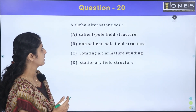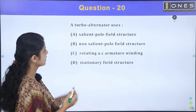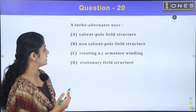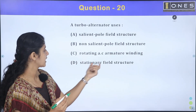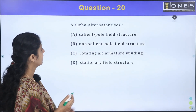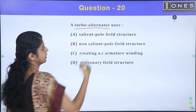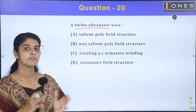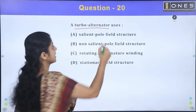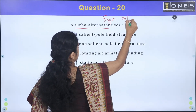Question 20: Turbo alternator uses salient pole field structure, non-salient pole rotating AC armature winding, or stationary field structure. A turbo alternator is the same as a synchronous generator — it is the alternator.